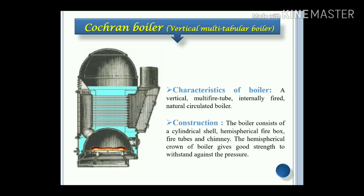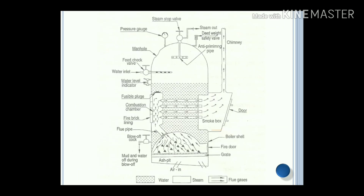The hemispherical crown of the boiler gives good strength to withstand against the pressure. Some of the components we already discussed. Here you can see the furnace. The grate provides the platform for burning of the fuel — fuel which may be solid, liquid or gas.